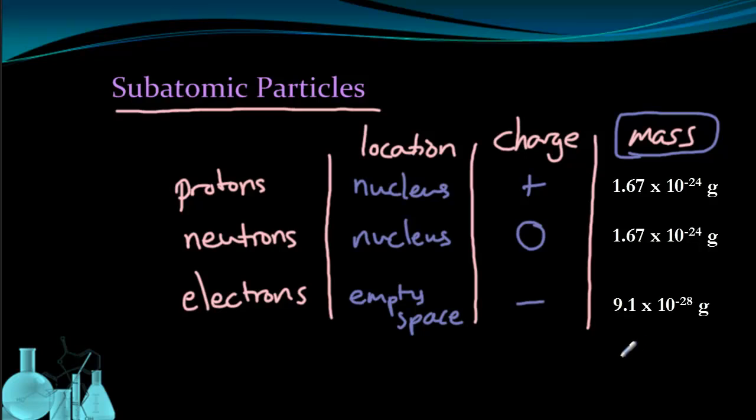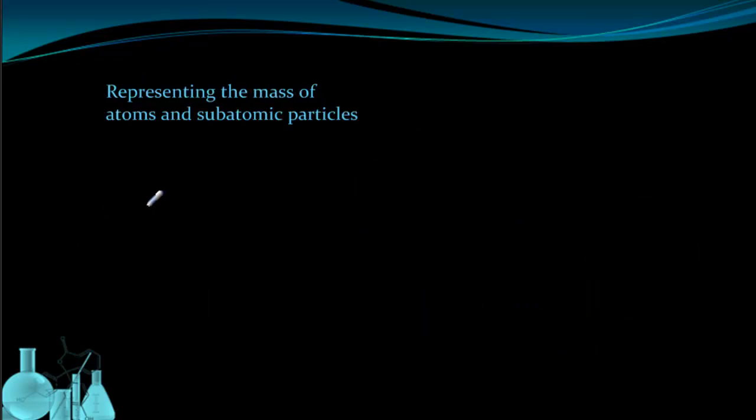So having to write out these numbers would be extremely annoying if you had to do it over and over again. So we need a more effective way of representing mass. To make the mass easier to represent, it was decided that a proton and a neutron would both have a mass of one atomic mass unit. So we came up with a new unit called atomic mass unit or AMU.